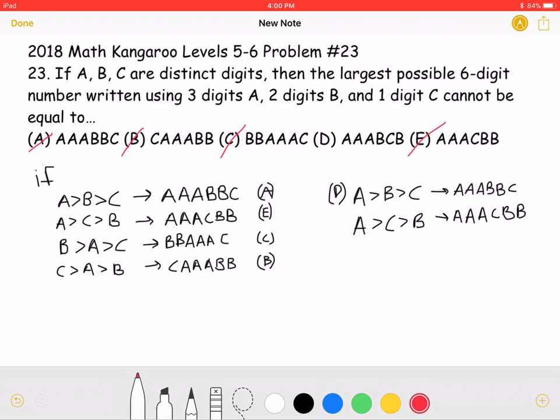We cannot possibly have AAABCB because it alternates B and C, which is not possible. This means the answer choice D is correct.